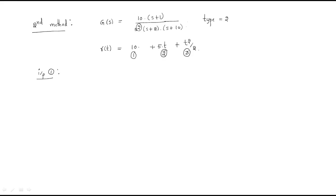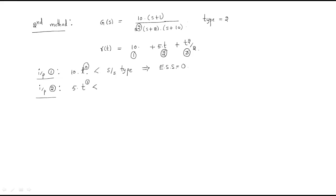For input 1: it is 10·t⁰, which is order 0. The system type is 2, which is higher than the input order, so the steady state error is 0. For input 2: it is 5t, which is t¹ (order 1). The system type is still 2, which is higher, so the steady state error is again 0.